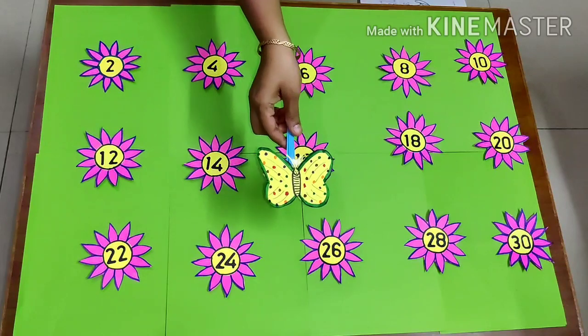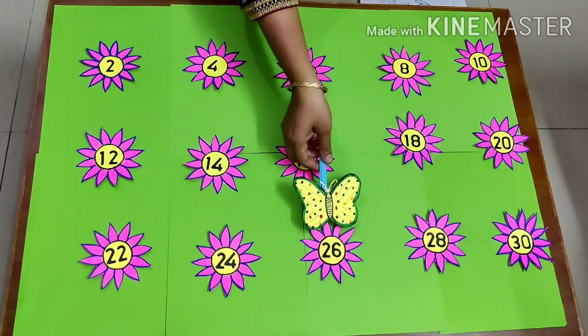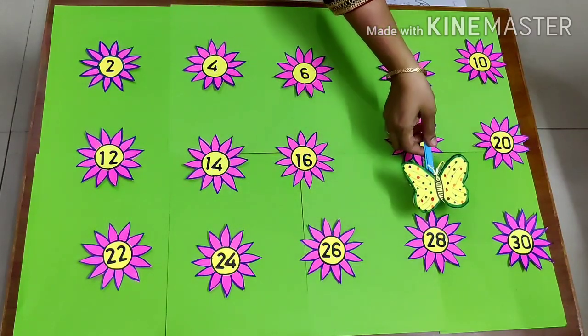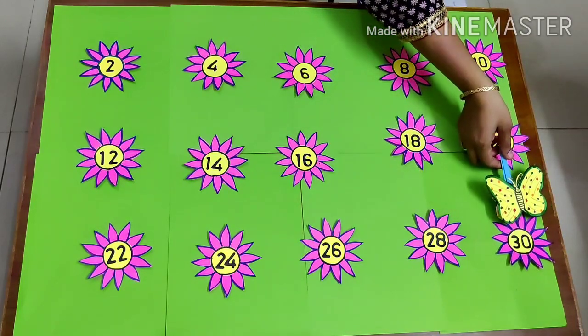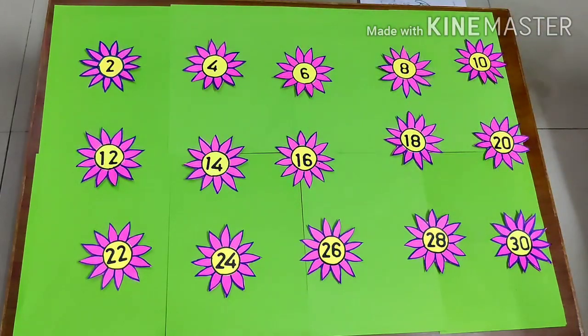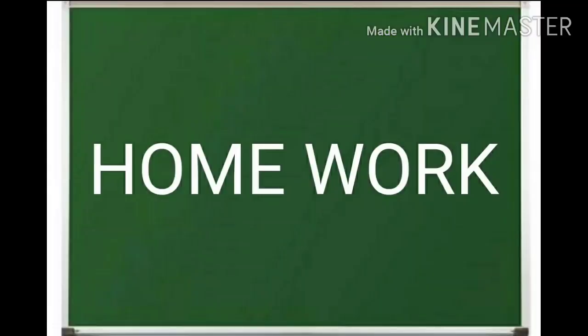24, 26, 28, and last 30. Dear students, this is the jump of 2. Now it's time for homework. Students, you have to write counting 1 to 30 on the floor of your house and take jump of 2.